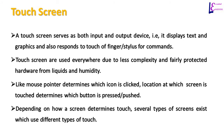A touch screen serves as both input and output device — it displays text and graphics and responds to touch of a finger or a stylus for commands. Touch screens are very simple to use; unlike keyboards, their hardware is protected from liquids and humidity. That's why they are used everywhere. To detect the position of touch, like a mouse pointer determines which icon is clicked, the location at which the screen is touched determines which button is pressed. Depending on how a screen determines touch, several types exist.